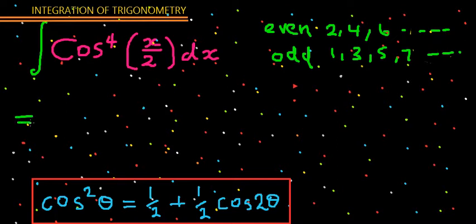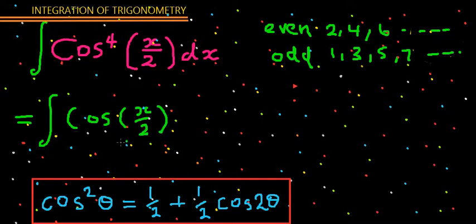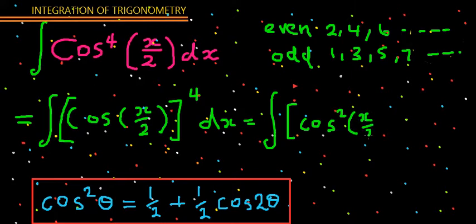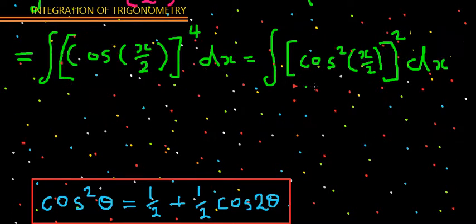So let's change this expression first. We have cosine raised to the power of 4. Take one cosine squared and rewrite it using the identity. So we expand this using the rule — cosine squared equals one-half times one plus cosine of the double angle.